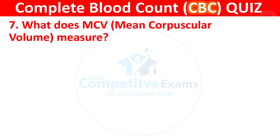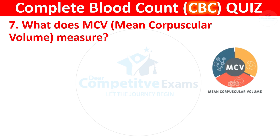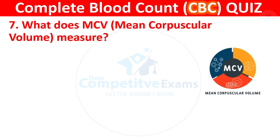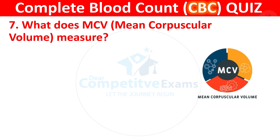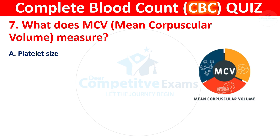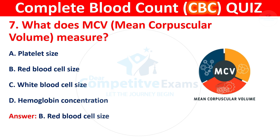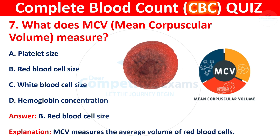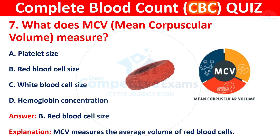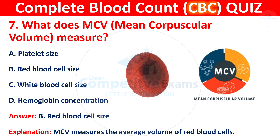Question 7: What does MCV — mean corpuscular volume — measure? Your options are platelet size, red blood cell size, white blood cell size, or hemoglobin concentration. The correct answer is B, red blood cell size. The MCV measures the average volume of red blood cells.